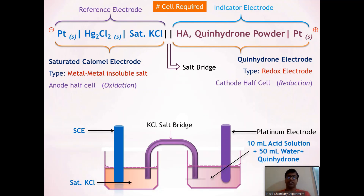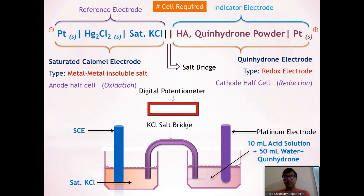If you observe the cell representation, the anodic half cell has a negative sign and the cathodic half cell has a positive sign. Therefore, the saturated calomel electrode is connected to the negative pole of the digital potentiometer, while the platinum electrode is connected to the positive terminal. As soon as both electrodes are connected, the digital potentiometer displays a value in volts — this value is the EMF of the electrochemical cell, denoted by EC.